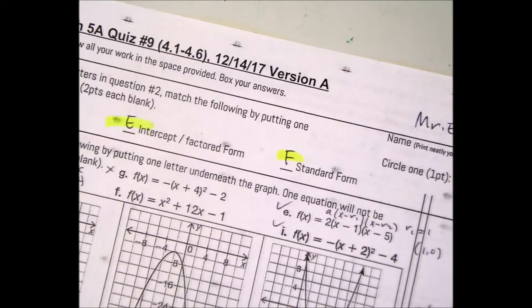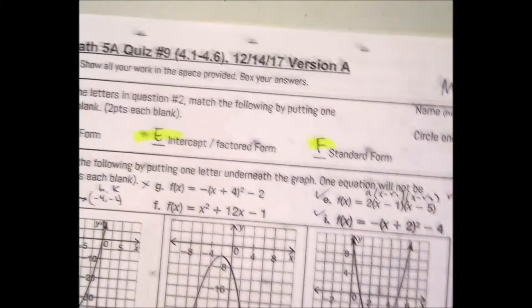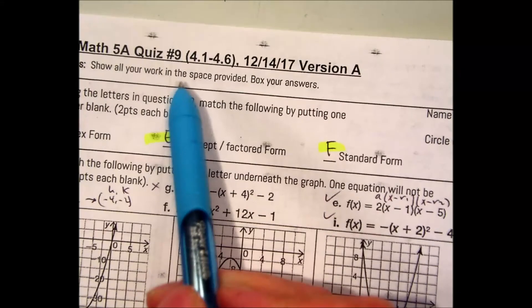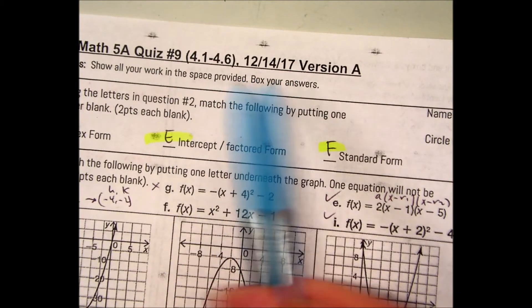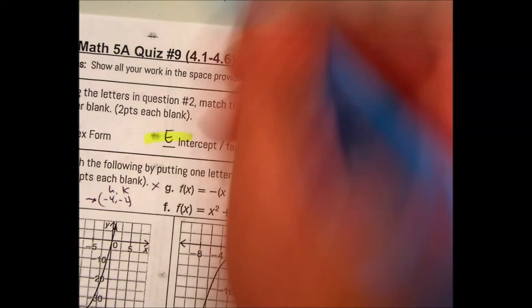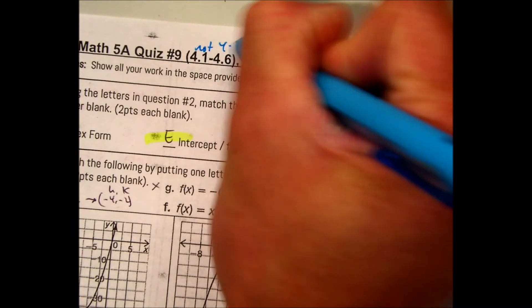Alright, let's go over quiz number nine. December 14, 2017, this is 4.1 to 4.6, not including 4.4. This is version A.